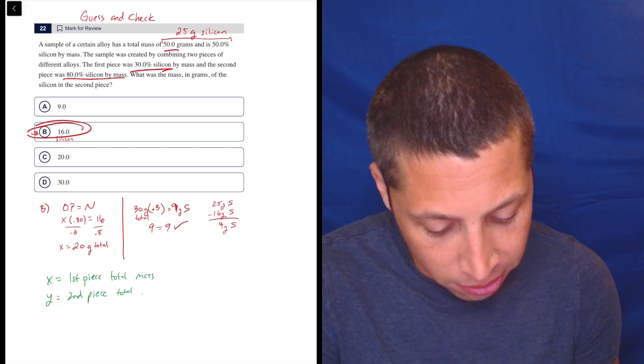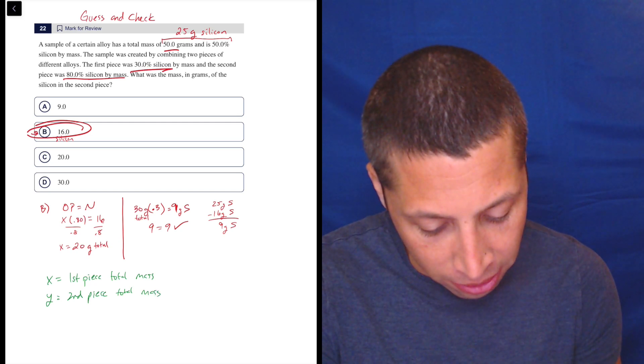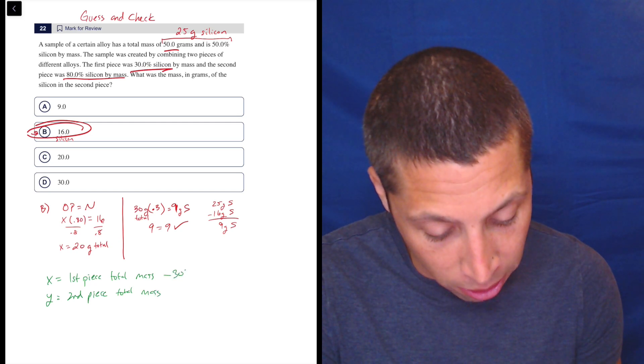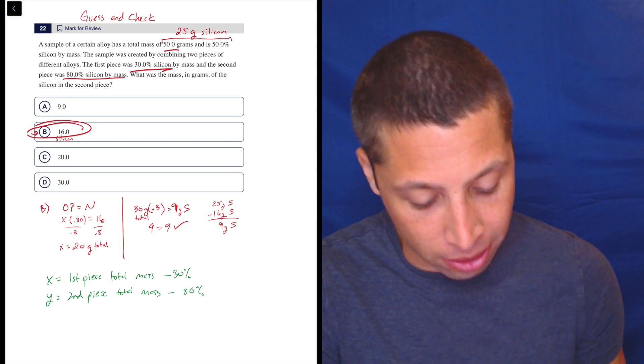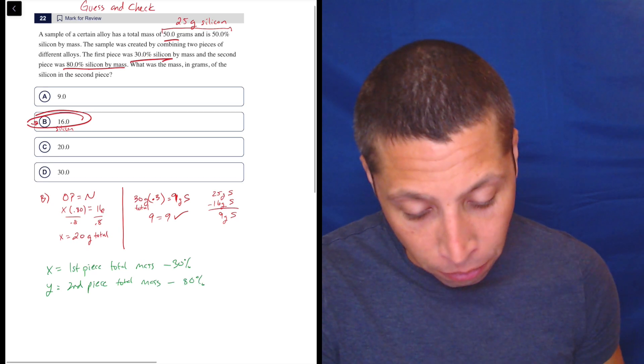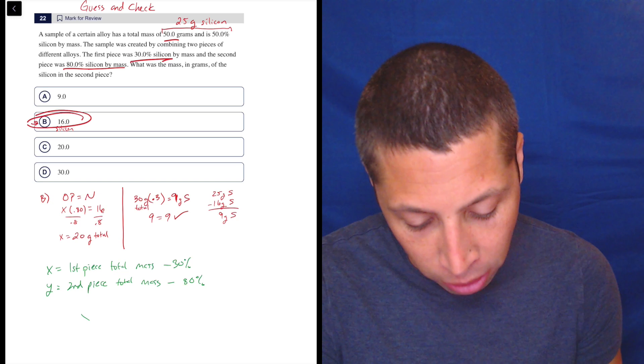And just so I can organize things, the first piece is the one where it's 30% silicon. And the second piece is where it's 80% silicon. So we'll use that in a second, but the first equation is going to be that the total mass of the first piece plus the total mass of the second piece is going to be 50 grams.